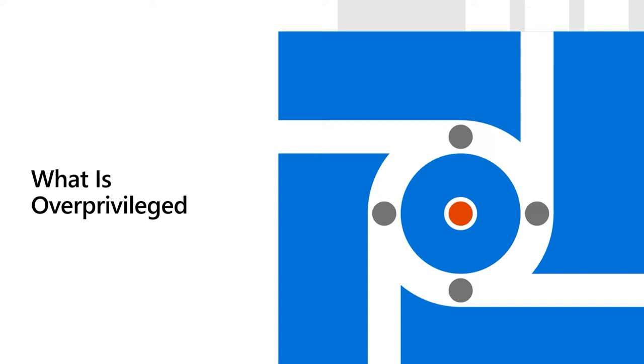The first topic we're going to cover is overprivilege. Overprivilege occurs when an application requests or is granted more permissions than it needs to function. I will explain what this means with a couple of examples.